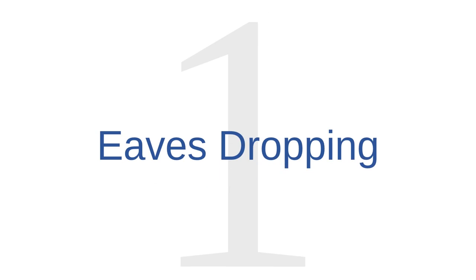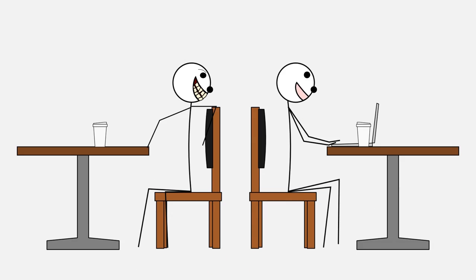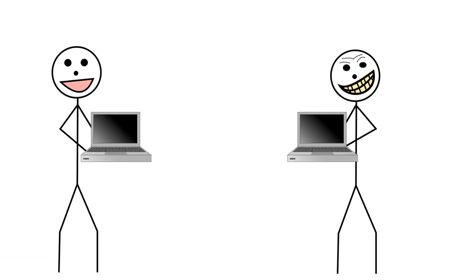Email threat number one is eavesdropping. Eavesdropping is when other people observe your internet traffic without you knowing it. There are two primary eavesdropping threats. The first is somebody eavesdropping by simply observing you without your knowing it — sometimes people will just look over your shoulder and watch what you're doing. They could observe things like your passwords, or they could read your emails if they're open on your screen.